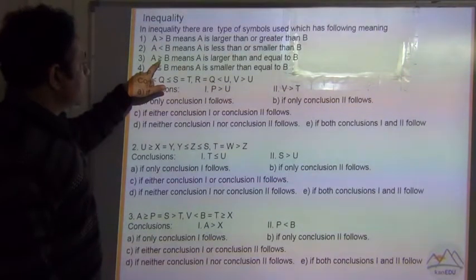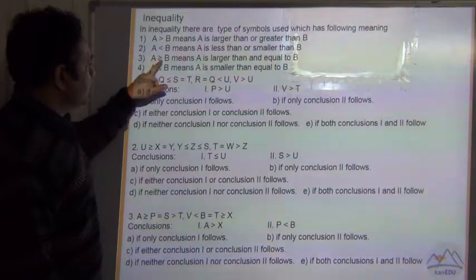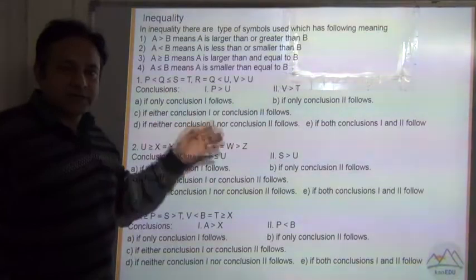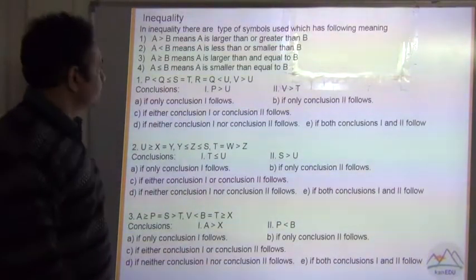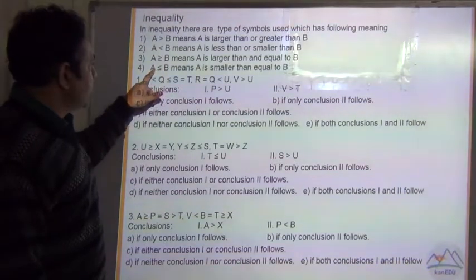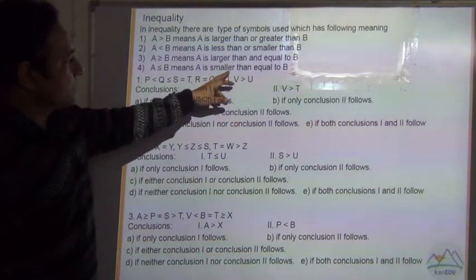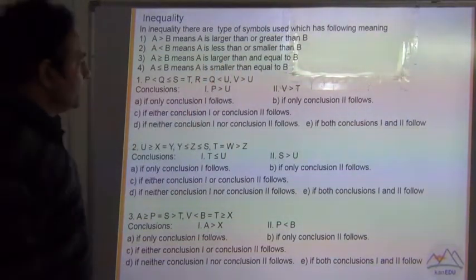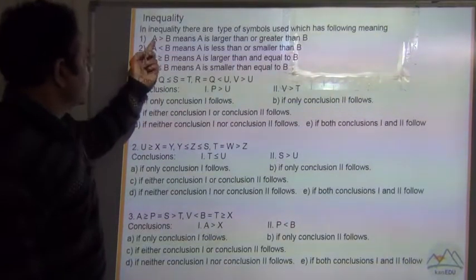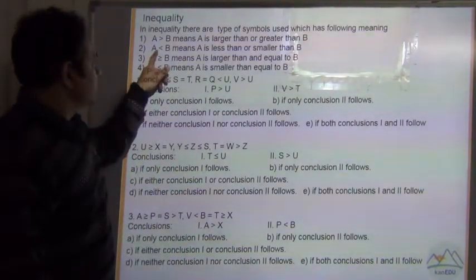Here we have a sign with the opening side and an equal to. So it means A is greater than or it can be equal to also, but it is not definite that it is always greater than — it can be equal also. Similarly, here we have the opening on side B, it means A is less than or equal to B. So A and B can be equal also in both these cases. Here A is greater, but in the second case A is less than B.